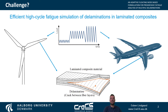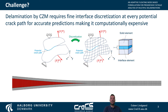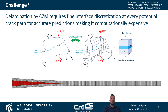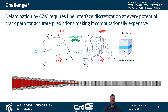The challenge we want to solve is to efficiently perform high-cycle fatigue simulation of delamination in laminated composite structures like wind turbine blades and airplanes. Delamination simulation today is typically conducted by cohesive zone modeling within the framework of the finite element method, making it convenient for solving complicated delamination problems. But the Achilles' heel of cohesive zone modeling is that it's computationally expensive, since it requires fine interface discretization at every potential crack path, which limits its use in larger scale problems.